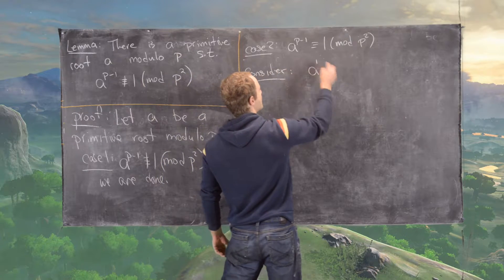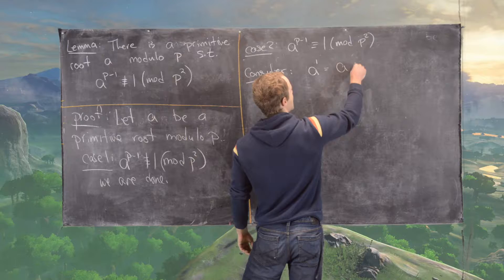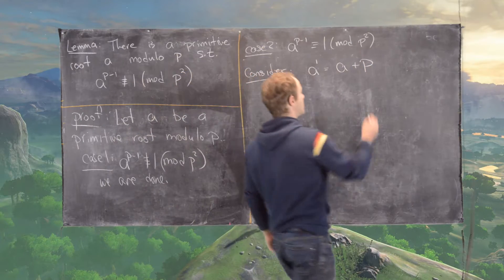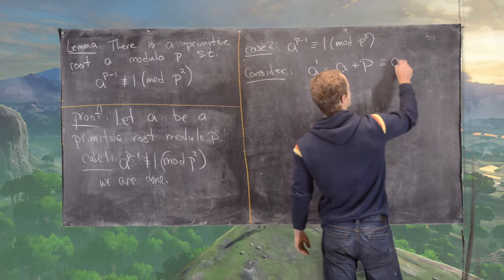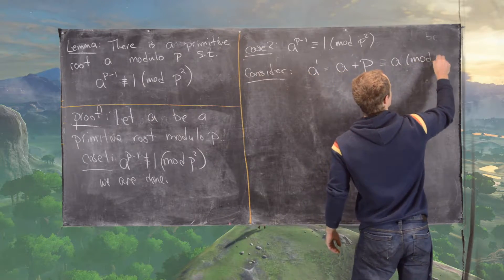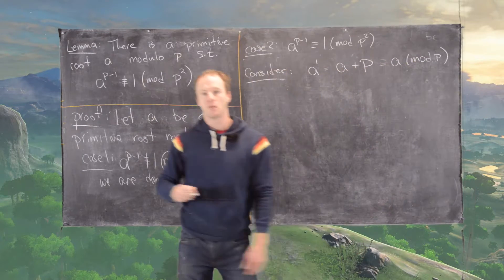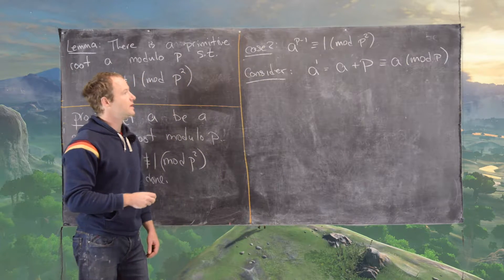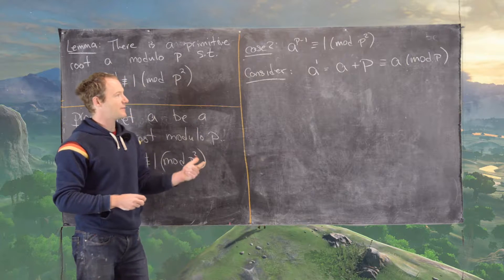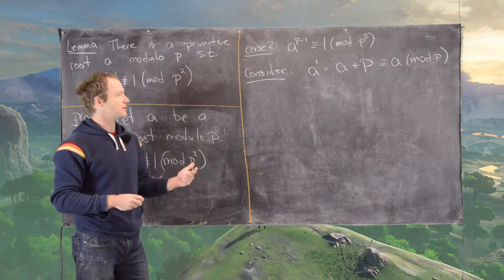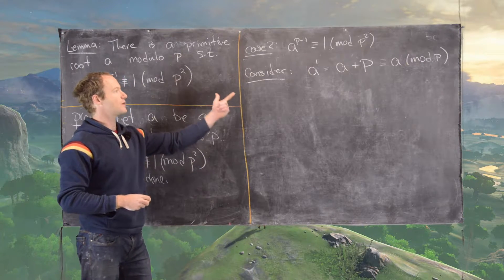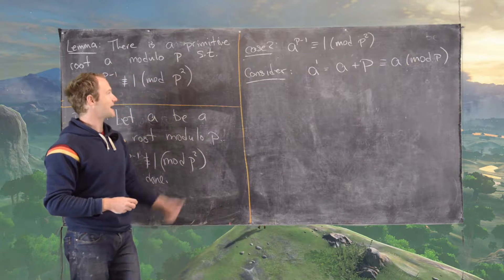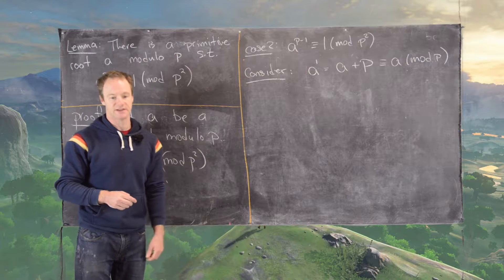So we want to consider a prime, which equals a plus p. And now, first of all, notice that this is congruent to a modulo p, which tells us that a prime is also a primitive root modulo p. So we have a and a prime are primitive roots modulo p.